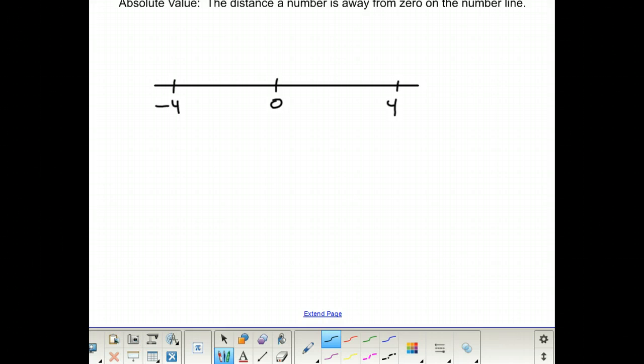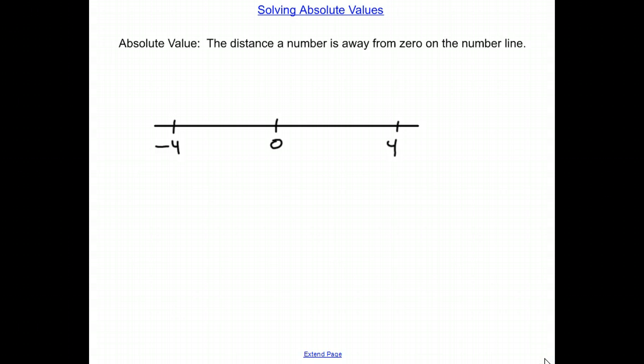So here we can see that both four and negative four are the same distance away from zero on the number line. So we can say that the absolute value of four is going to be the same as the absolute value of negative four, which is of course four.